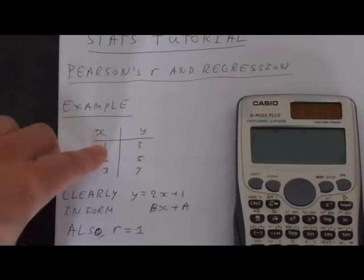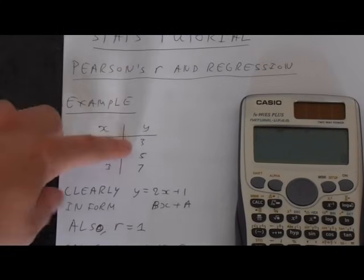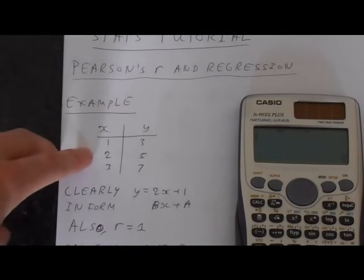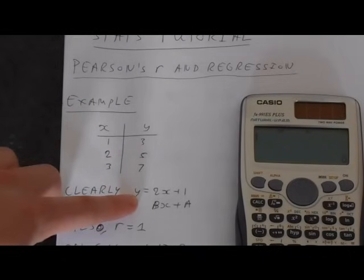Clearly, when you look at this, you can see that the equation is going to be 2x plus 1. 2 times 1 plus 1 is 3. 2 times 2 plus 1 is 5. Clearly, y equals 2x plus 1.